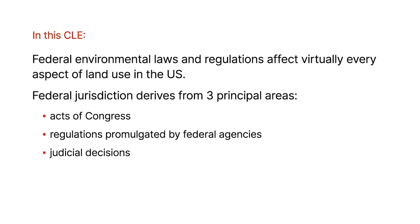Federal jurisdiction derives from three principal areas. Acts of Congress — the laws and statutes adopted by Congress and signed by the President. Regulations promulgated by federal agencies such as the EPA and USDA. And, as of today, July 5th, you're all aware of the most recent Supreme Court decision about the EPA and limiting its ability to regulate — something you should be mindful of. And judicial decisions, such as landmark Supreme Court decisions, that have reshaped the environmental land use landscape.